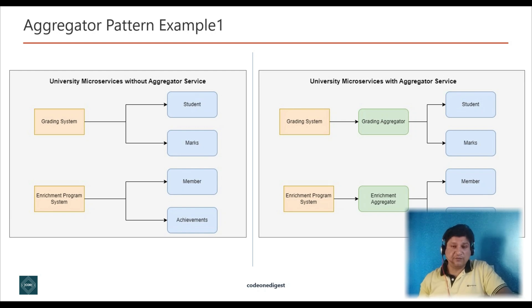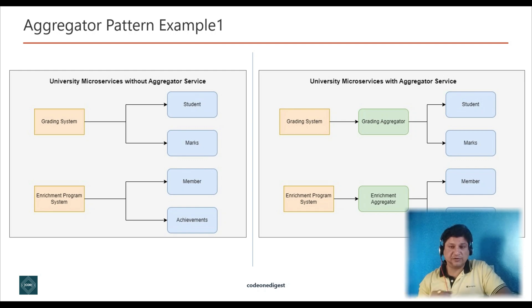When the grading system invokes the aggregator, it can send parallel calls to the student information service and the marks information service, get their responses, aggregate them into a single response to the originating request, and send that combined response back to the grading system.